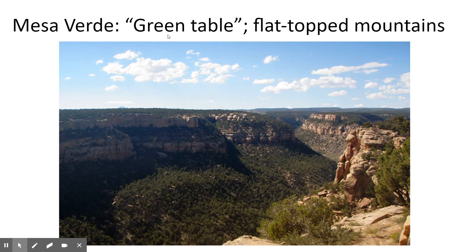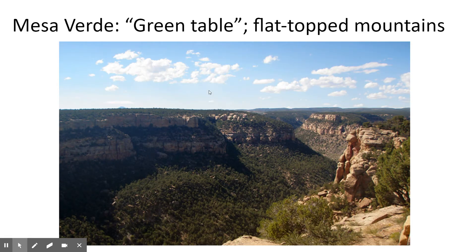Mesa Verde means 'green table,' so we have flat-topped mountains located in what is now Colorado. These mountains have growth on top, which is important because the ancient Puebloan — the Anasazi people who occupied this area — were farmers. They used to farm up on top and sometimes live up there, but also sometimes live in the structures built into the side of the mountain.